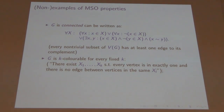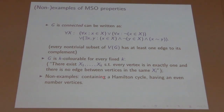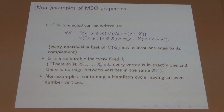So we have these two logical languages — first-order and monadic second-order. There are bigger languages too, but these are the two I'll consider. Importantly, there are properties that cannot be expressed in MSO either. In particular, containing a Hamilton cycle cannot be expressed in MSO, and that's not super easy to prove.